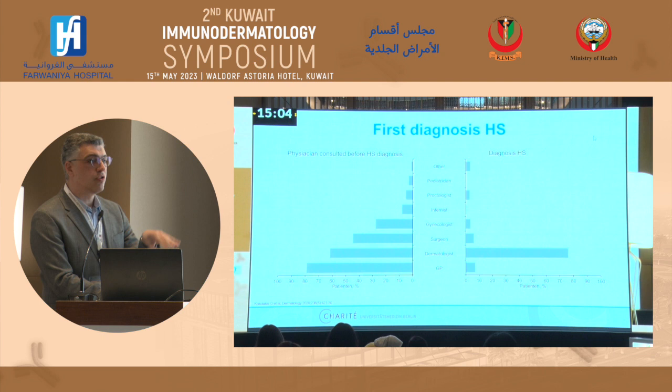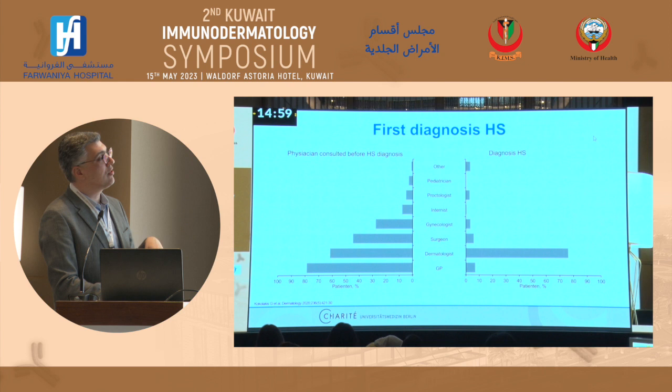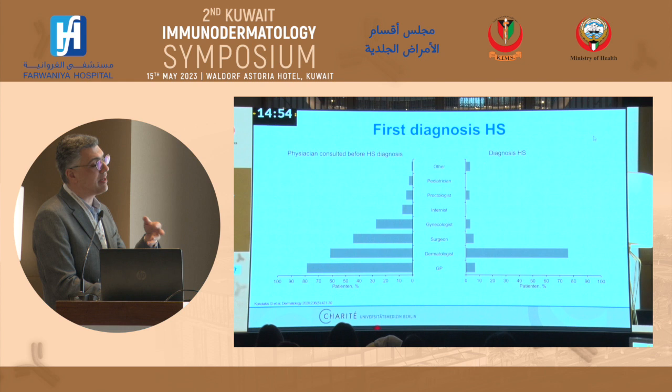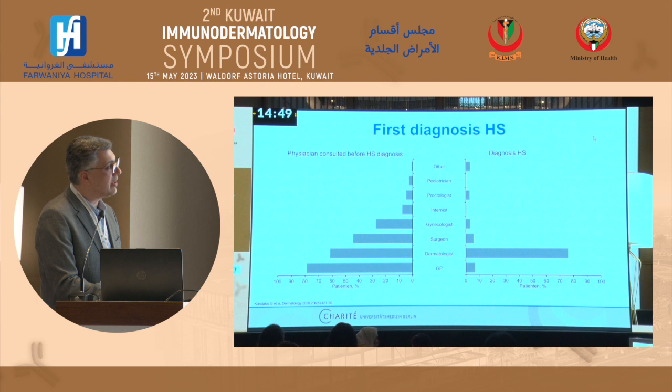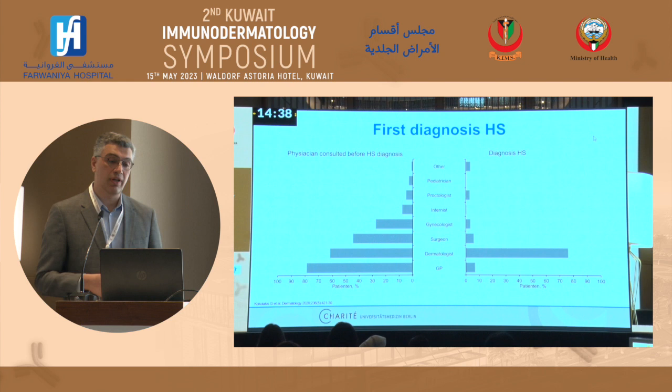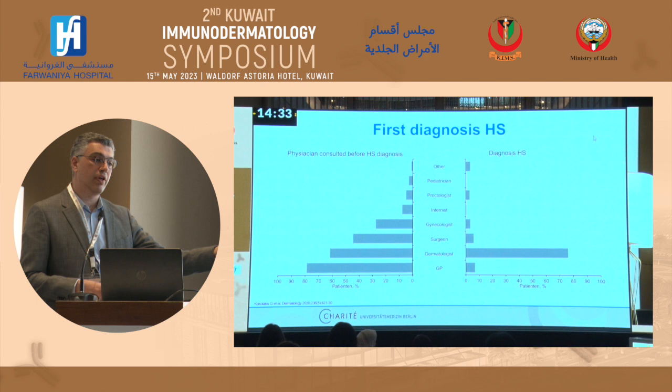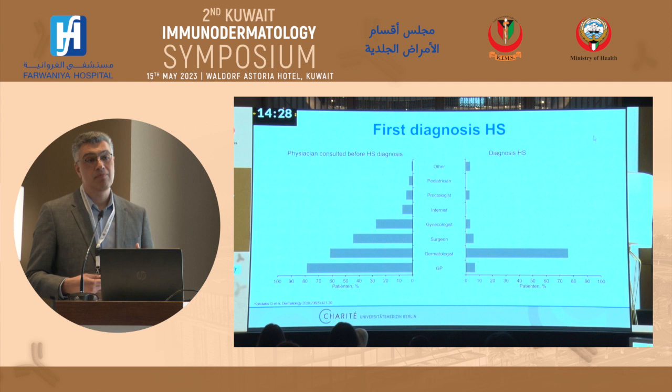How many doctors do these patients visit while searching for the right diagnosis? They go to GPs, dermatologists, surgeons, and every discipline dealing with these anatomical areas. But the point is, who set the right diagnosis? It was the dermatologist. This is a disease we have to manage — it is a dermatological disease. If we cannot operate, we can collaborate with surgeons. If we cannot manage the comorbidities, a GP can help. But this is fundamentally a dermatological disease.